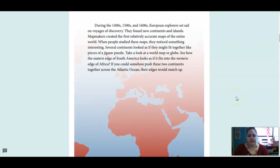During the 1400s, 1500s, and 1600s, European explorers set sail on voyages of discovery. They found new continents and islands. Map makers created the first relatively accurate maps of the entire world. When people studied these maps, they noticed something interesting. Several continents looked as though they might have fit together like pieces of a jigsaw puzzle. Take a look at the world map or globe. See how the eastern edge of South America looks as if it fits into the western edge of Africa. If you could somehow push these two continents together across the Atlantic Ocean, their edges would match up.